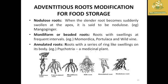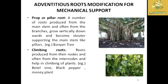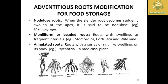Nodulose roots become suddenly swollen at the apex; example: mango ginger. Moniliform or beaded roots have swelling at frequent intervals; examples: Momordica and Portulaca. Annulated roots have ring-like swellings in their body and are mainly known from medicinal plants like Psychotria.